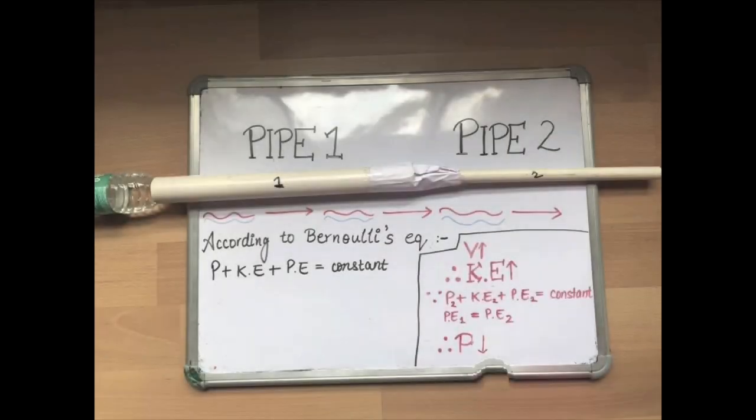Over here, I have two pipes joined together, pipe 1 and pipe 2. As you can see, pipe 1 is slightly thicker than pipe 2. Now, suppose water flows through pipe 1. As it enters pipe 2, the flow of the water will speed up in order to maintain a constant volume flow rate, thus increasing the water's kinetic energy.